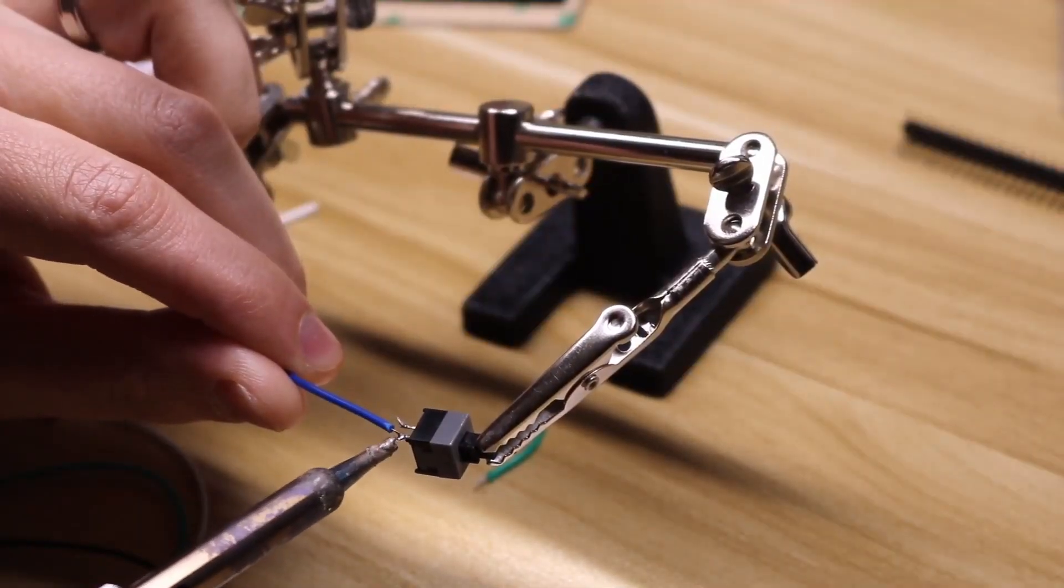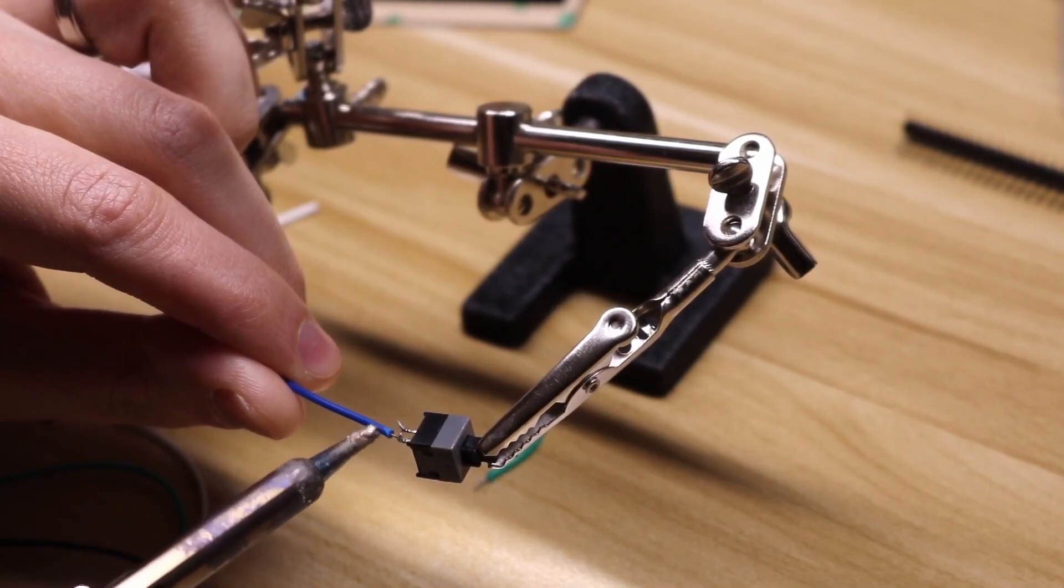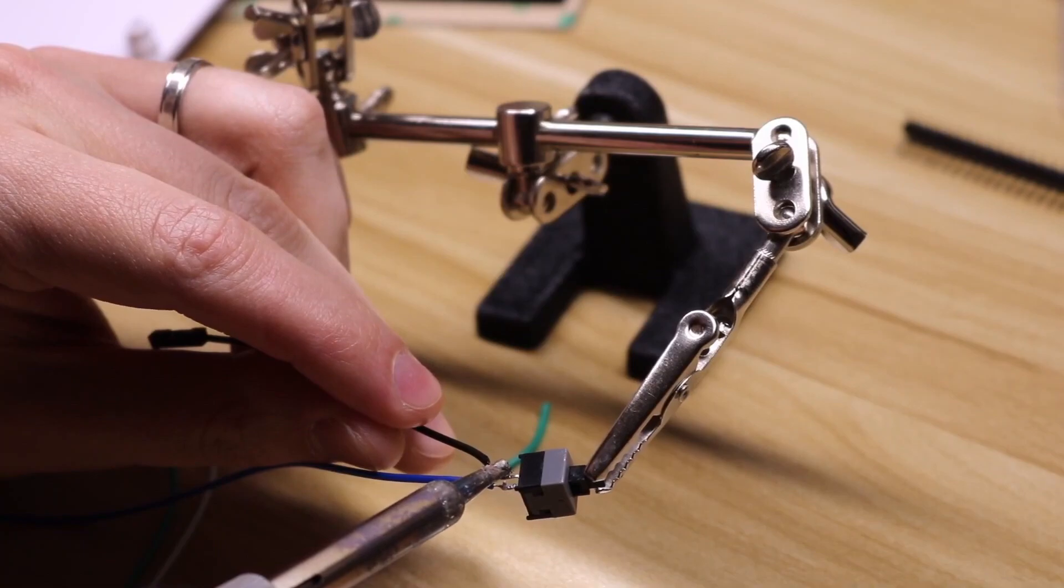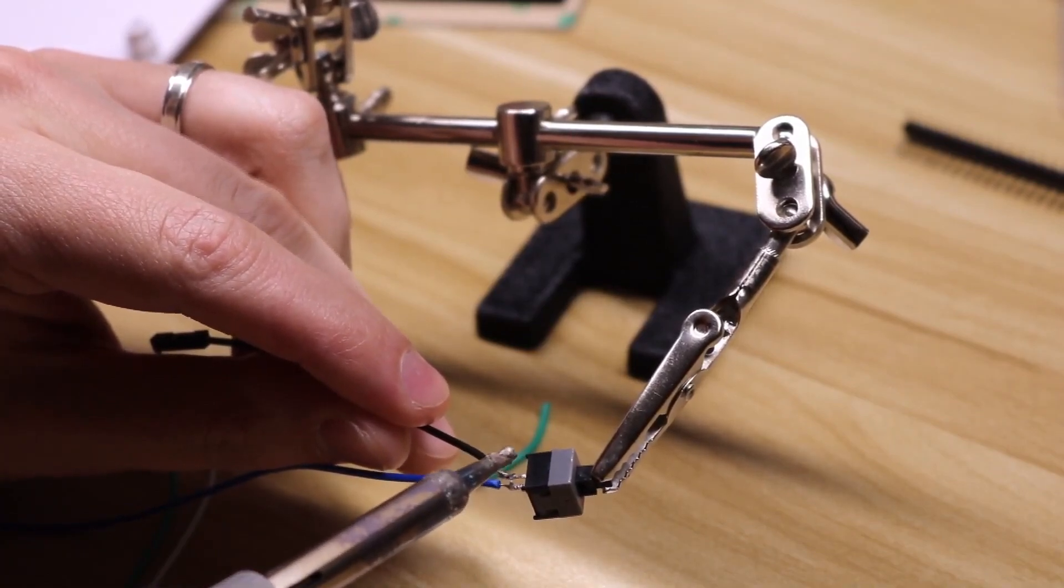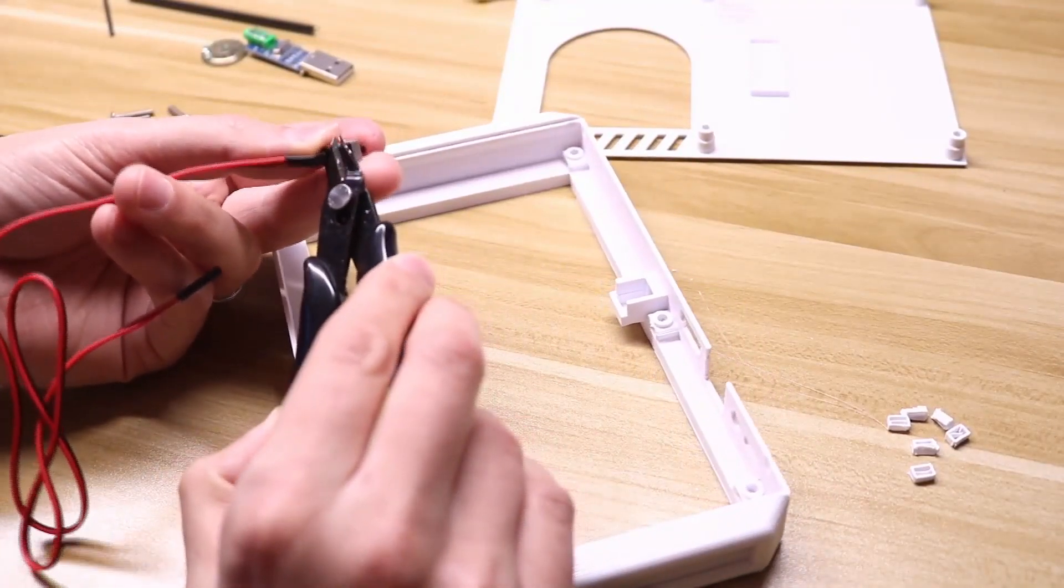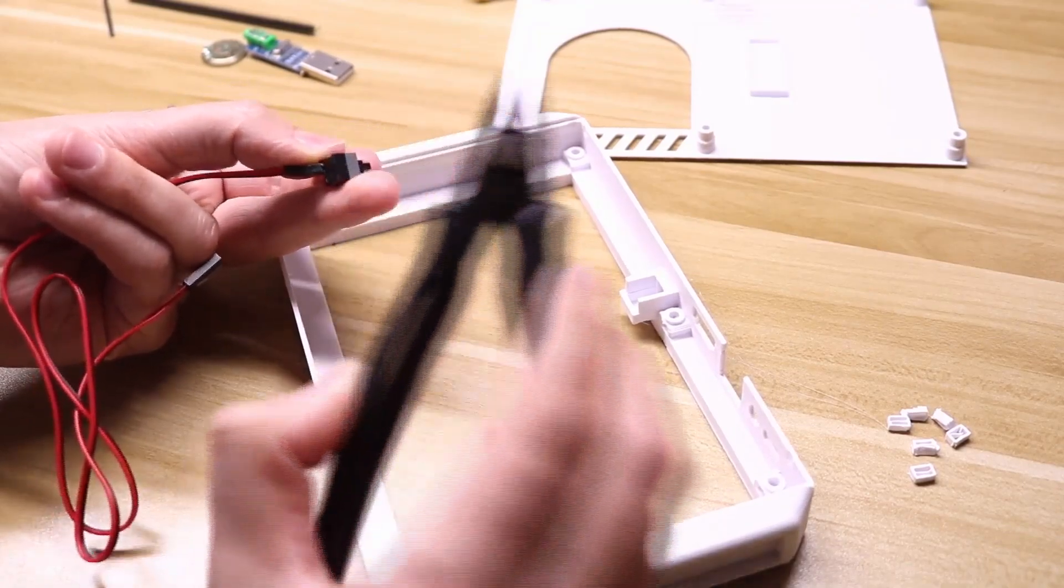Next, we're going to wire up the power button. Then we're going to install the power button, and it can help to remove these little feet that are on the bottom of the power button.